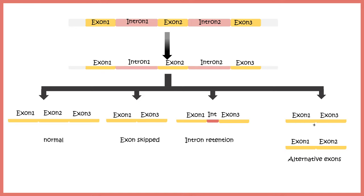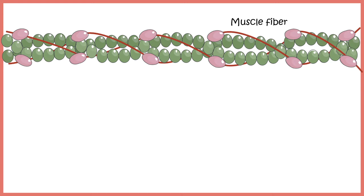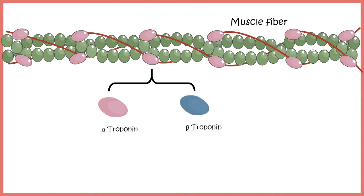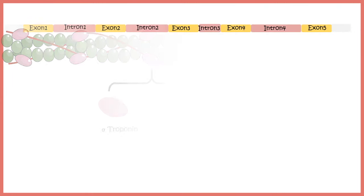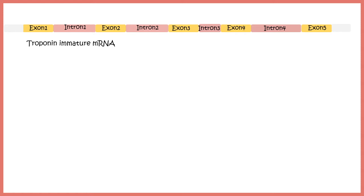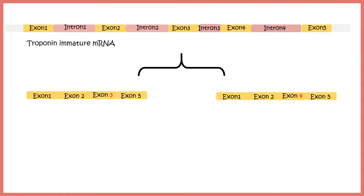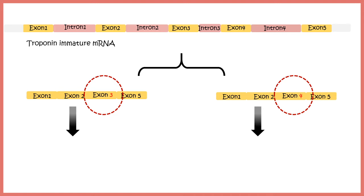In muscle cells and muscle fibers there are globular troponins with two isoforms: alpha troponin and beta troponin, which arise due to alternative splicing. The troponin pre-mRNA has four or five exons and four introns. Exons are selectively picked: in one case exon 3 is selected, and in another case exon 4 is preferred over exon 3, leading to different transcripts and production of alpha troponin or beta troponin respectively.